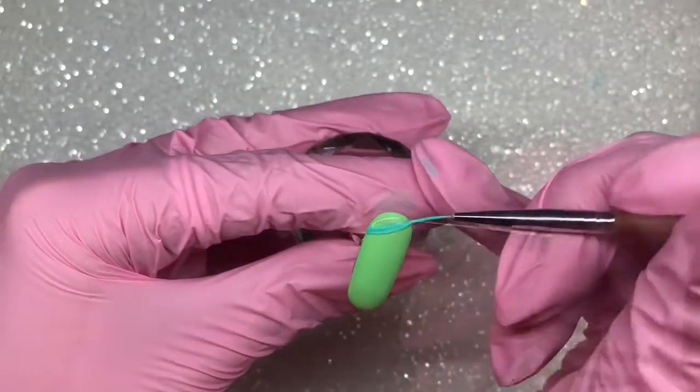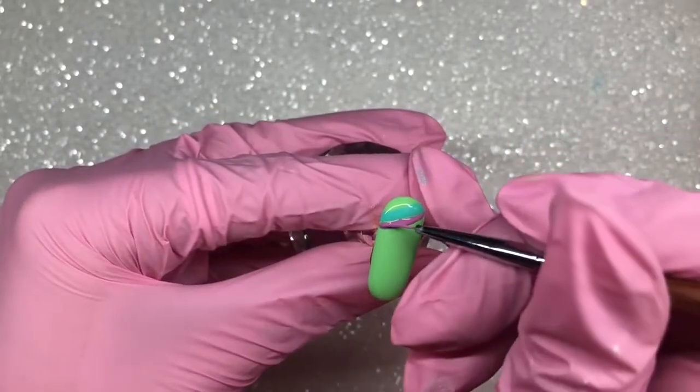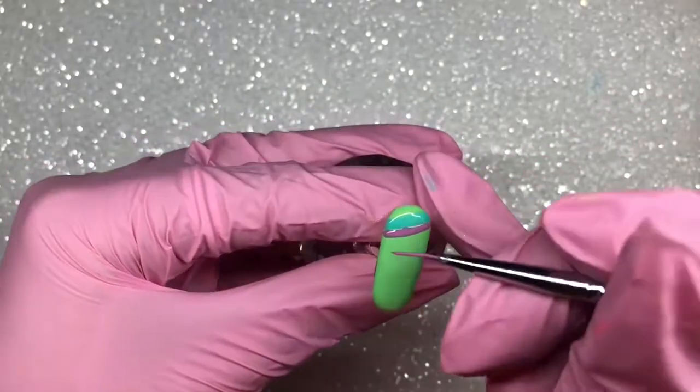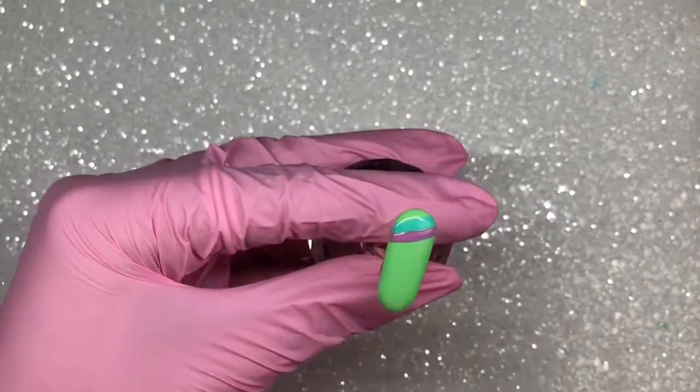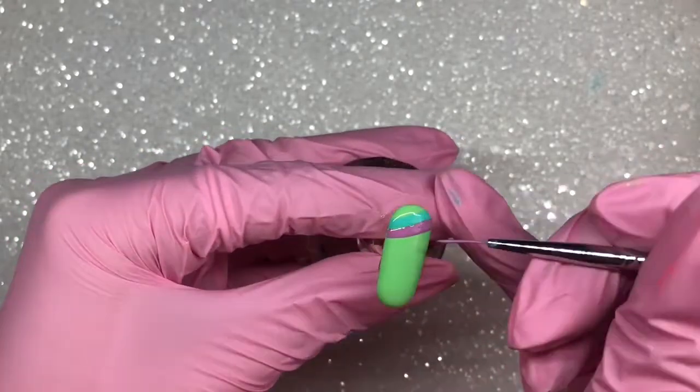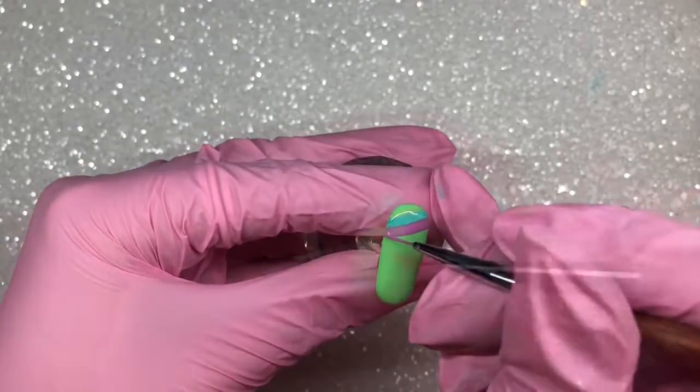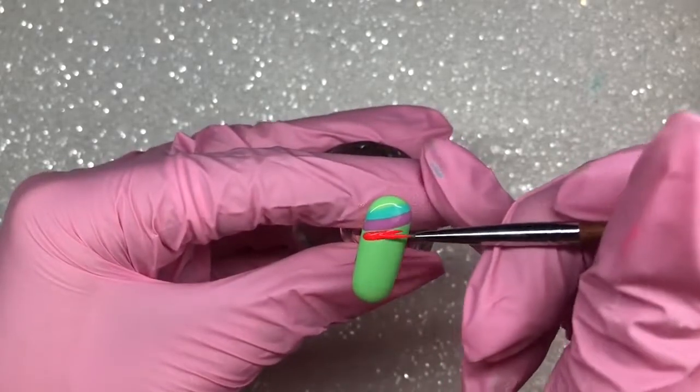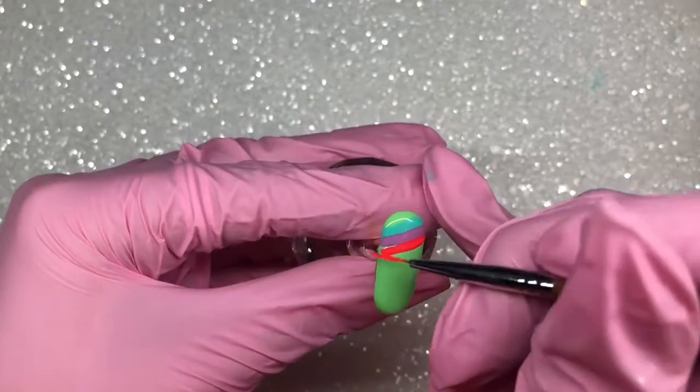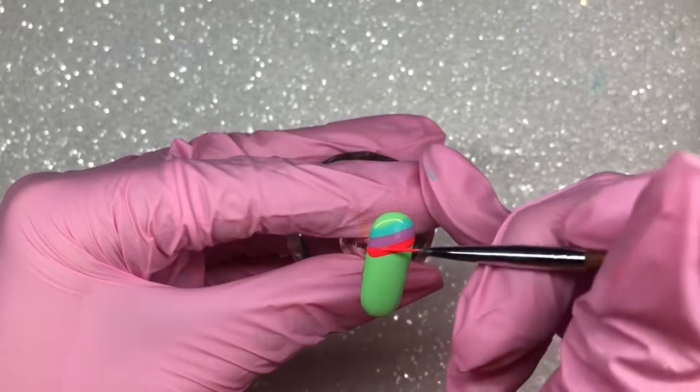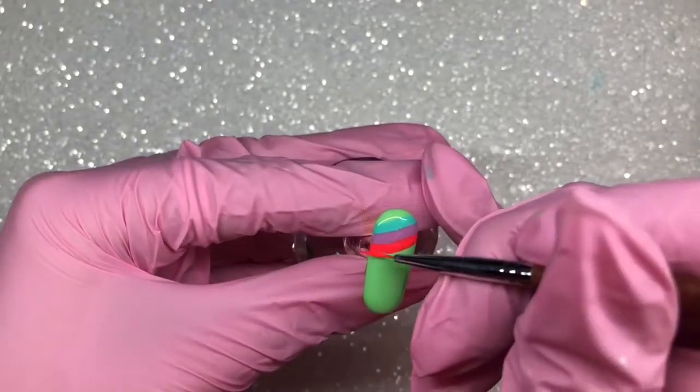Just use any striper brush you have. I'm going in one by one, adding thin stripes of all the gel colors that I've been using along the nail. I'm leaving them wet, so I'm not curing them all. I'm going through every single color and applying them diagonally across the nail. Once I've done them all, I will then repeat all the colors again.